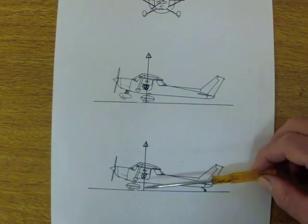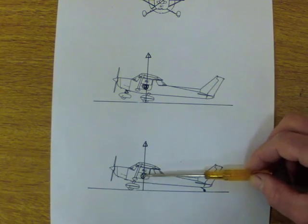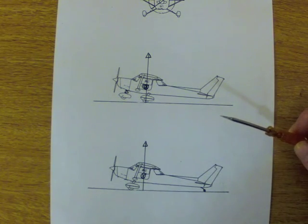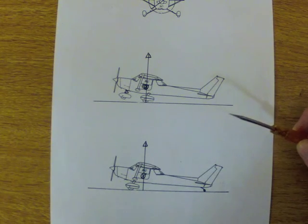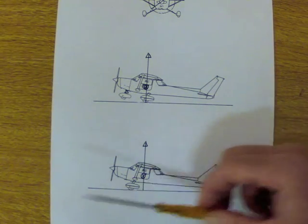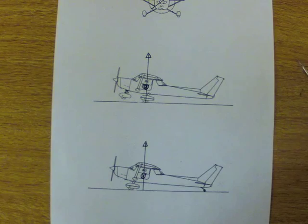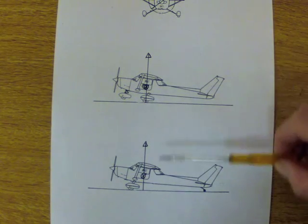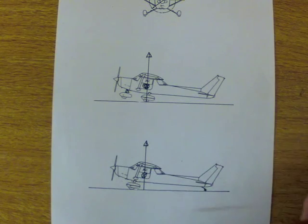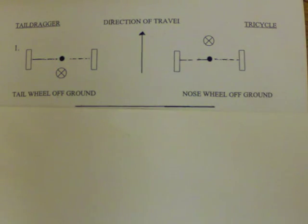Otherwise the aircraft, if it's still at flying speed, will bounce back off the ground, leaving you with rapidly decaying airspeed and the nose high — not a good situation. It needs remedying quickly with a burst of power from the throttle to hold altitude and cushion the aircraft back onto the ground. For this reason, the nose wheel aircraft is much easier generally to land than the tail dragging aircraft.